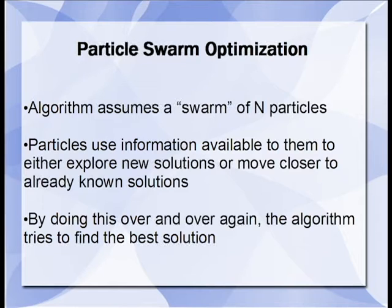The algorithm works by first assuming a swarm of N particles. These particles are analogous to individual birds or fish in the real world. These particles use information available to them to either explore new solutions to a problem or move closer to already known solutions. By doing this over an extended period of time, the particles will eventually find, or get very close to, the optimal solution to a problem.